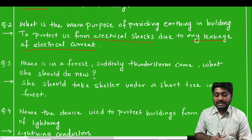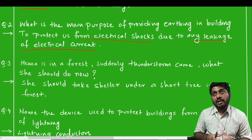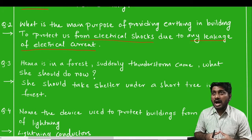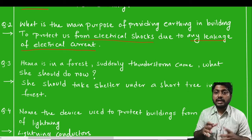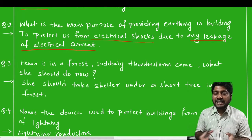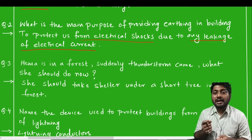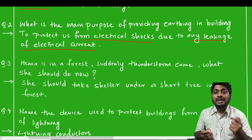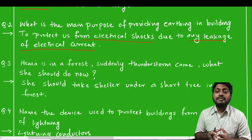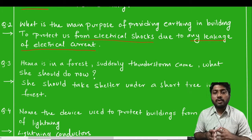Many electrical appliances are also made up of metals — their body is made up of metals. After use, there might be a possibility that some charges are accumulated on those metal surfaces. To get rid of those stray charges, earthing connection is provided. Through the earthing connection, the charge from the metal bodies transfers to the earth, and we are prevented from getting electrical shocks.